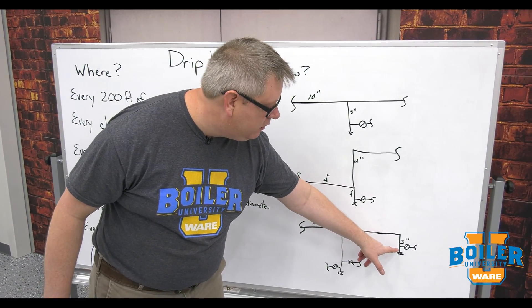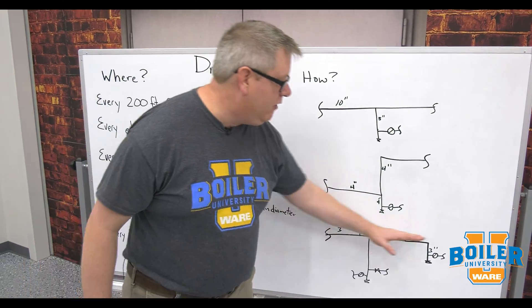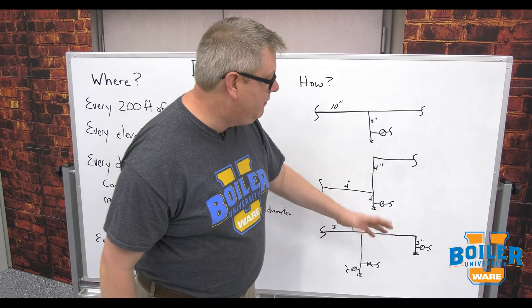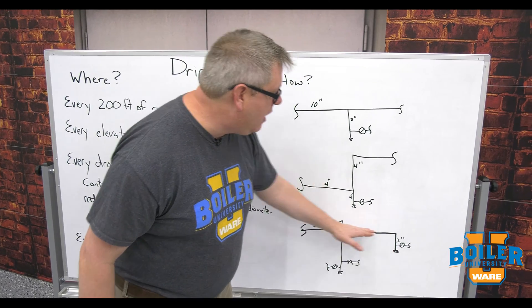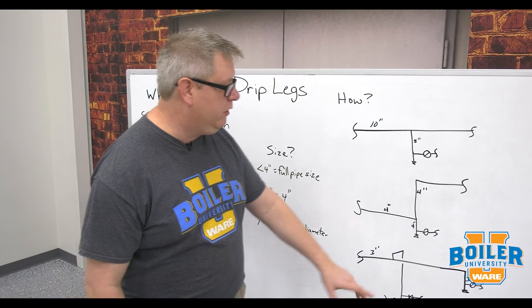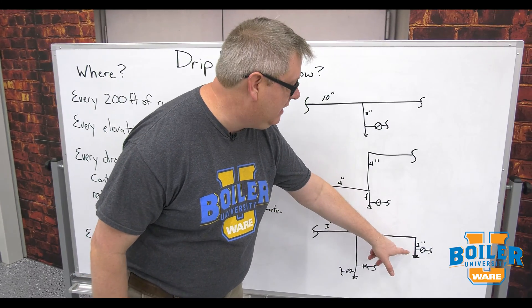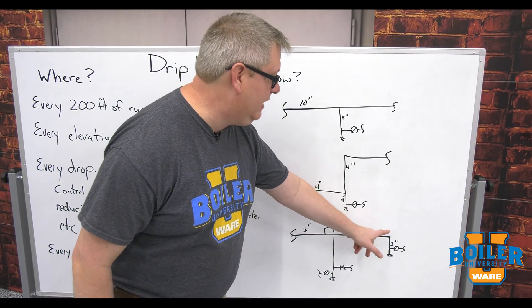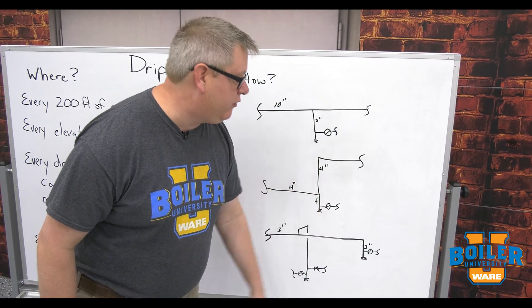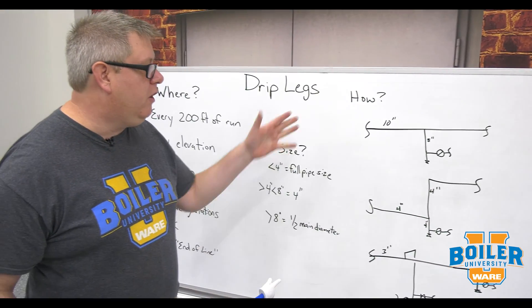And here we also show our end of main drip leg. So that main running down to the end of the plant—maybe we're going to add something down there later, it doesn't matter—we can't allow condensate to accumulate in there. It's going to cause problems and corrosion. So we'll drop with a 90. If we want to, we can use a T and put an air vent on there. Come out the side to our trap.